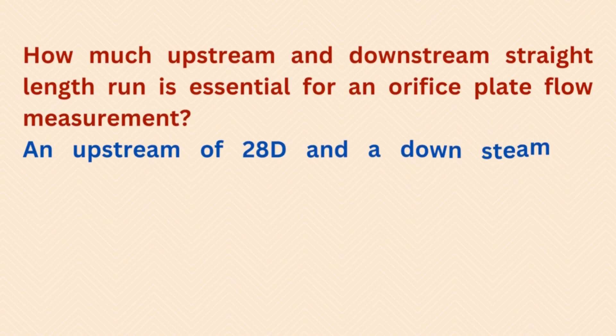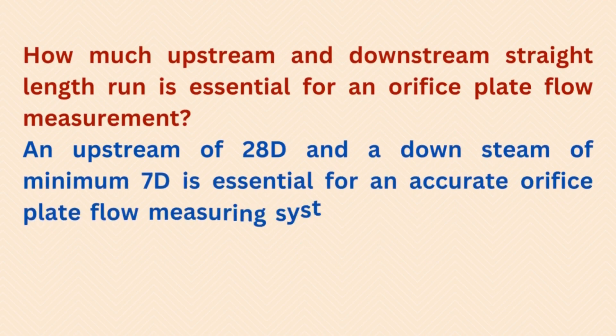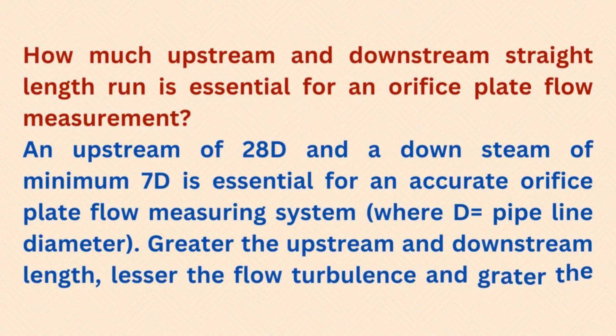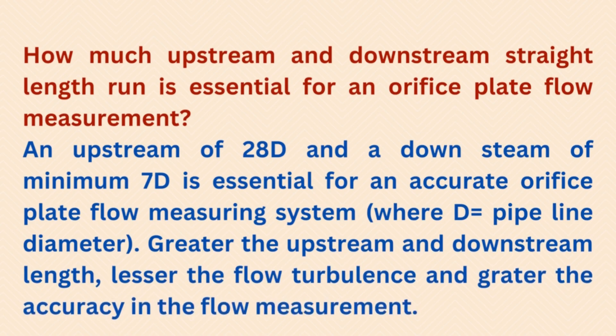How much upstream and downstream straight length run is essential for an orifice plate flow measurement? An upstream of 28D and a downstream of minimum 7D is essential for an accurate orifice plate flow measuring system, where D is equal to the pipeline diameter. Greater the upstream and downstream length, lesser the flow turbulence and greater the accuracy in flow measurement.